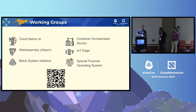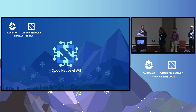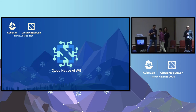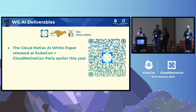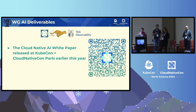Moving on to some deep dives on updates for the working groups — just a refresher, six different working groups, and we'll go through each and provide some updates. The cloud-native AI working group started as part of a collaboration between TAG Runtime and TAG Observability. One of the things that came out of this working group was a white paper on all things cloud-native and AI, which we released at KubeCon Paris.